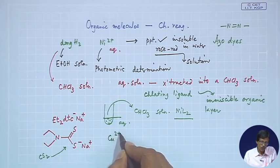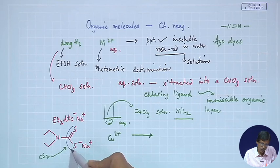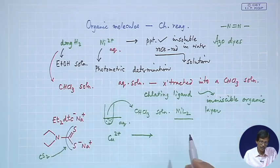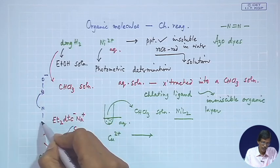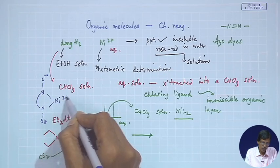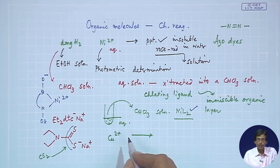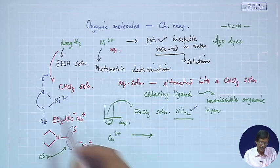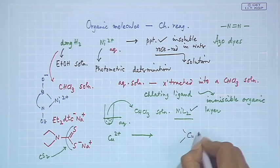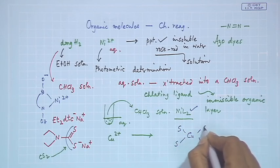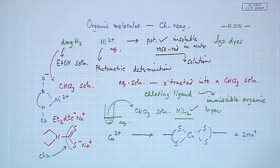Diethyldithiocarbamate reacts with copper Cu2+. Just as DMG has an N-N function binding to Ni2+ (giving NiL2), the dithiocarbamate has an S-S function binding to Cu2+, forming a corresponding chelate with two ligands per copper center.